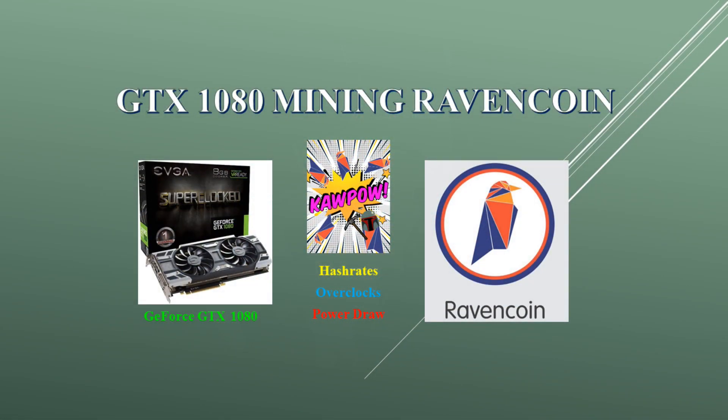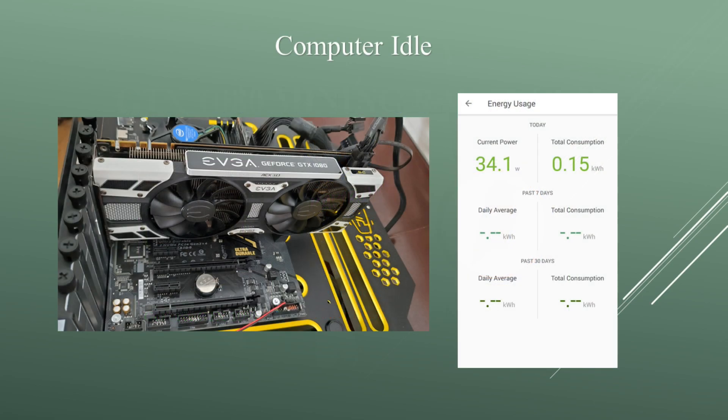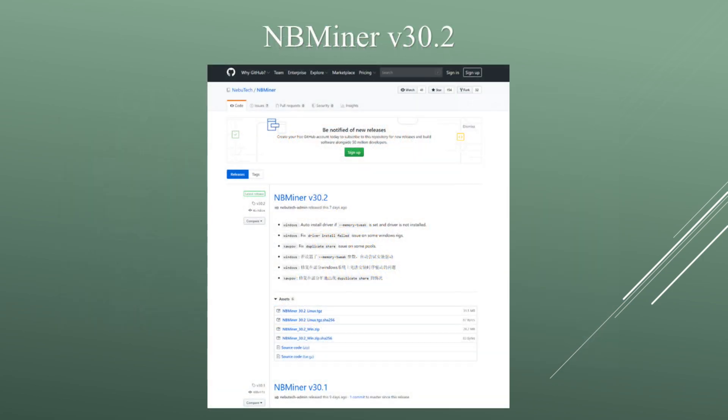The GTX 1080 I'm testing is from EVGA — this is the SC Gaming Edition. I'll be sharing my results mining Ravencoin on the KawPow algorithm. This is my test bench with the GTX 1080, and it idles around 34 watts. The miner program I'm going to use is NBMiner version 30.2.